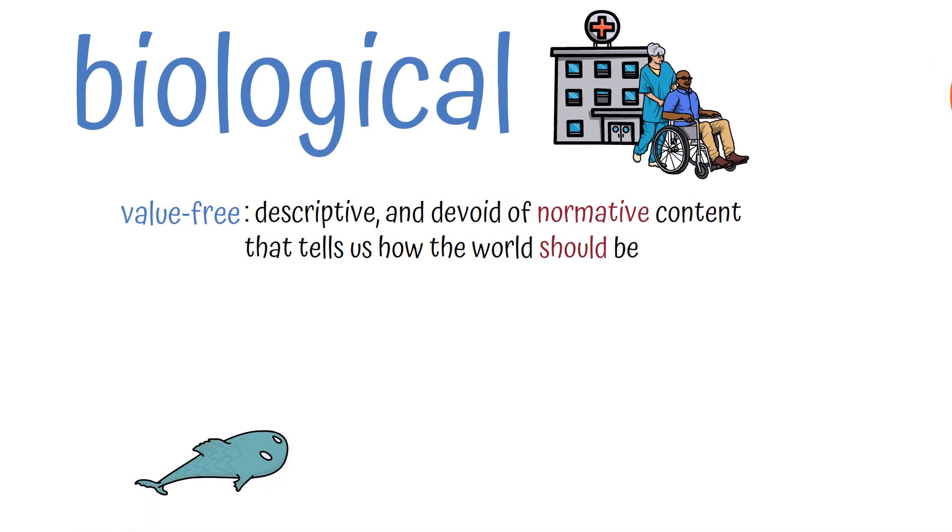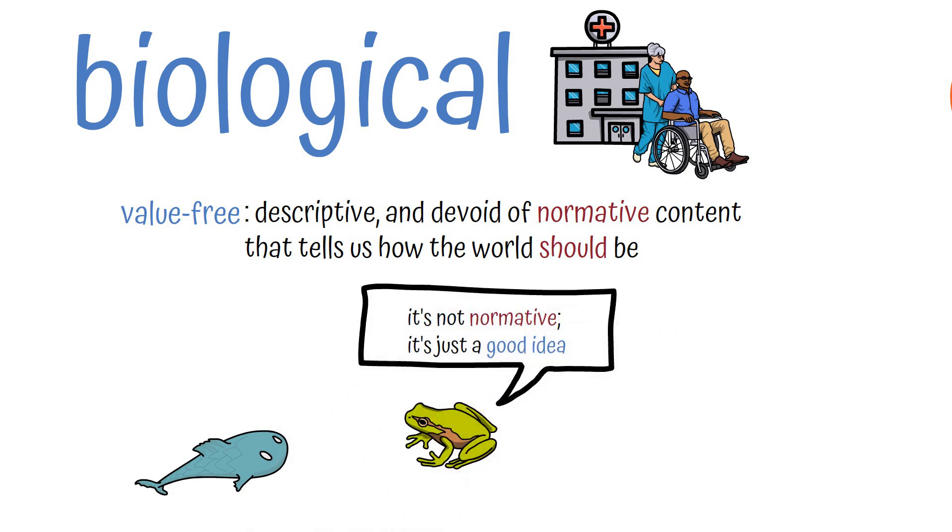If legs were selected to move how they do, with articulation as humans often have and with the strength humans often have and so on, that means while there is not a normative good behind legs working that way, there is a value-free evolutionary prudentialism to legs functioning in that way.